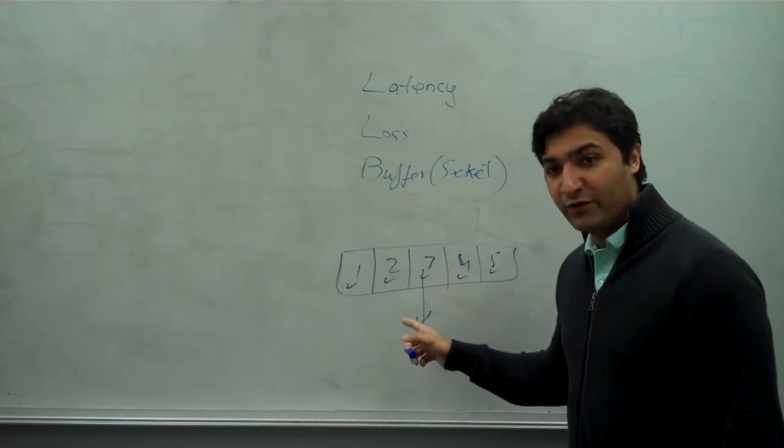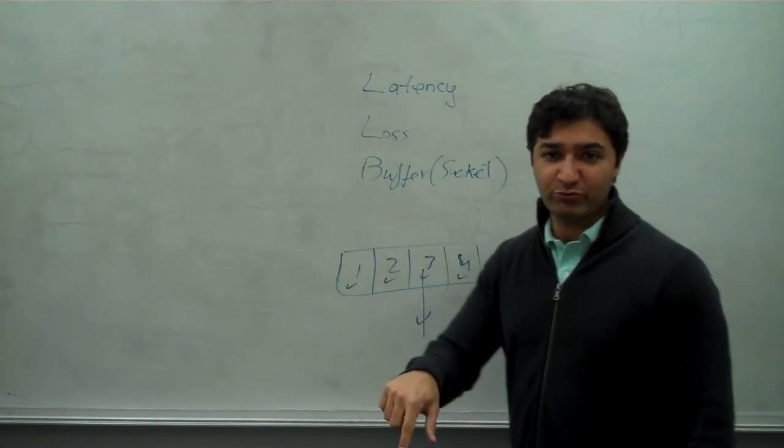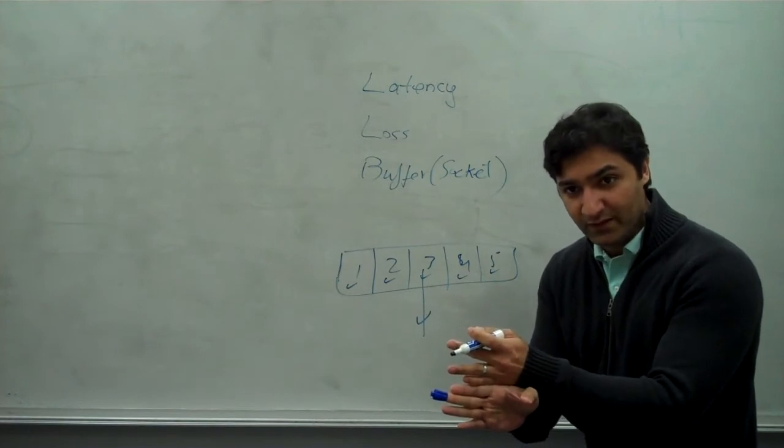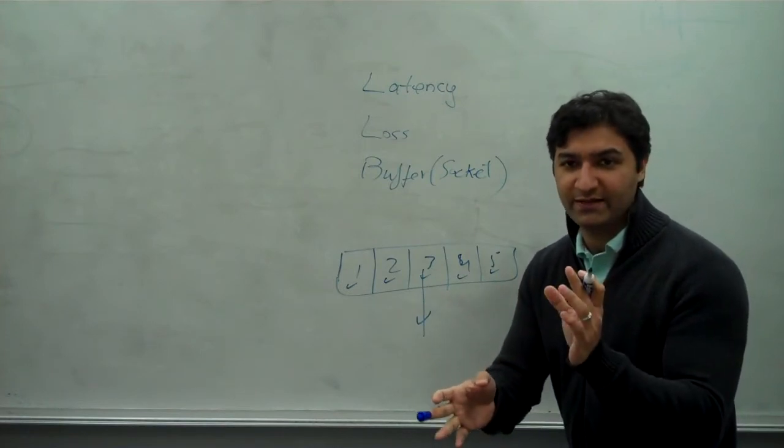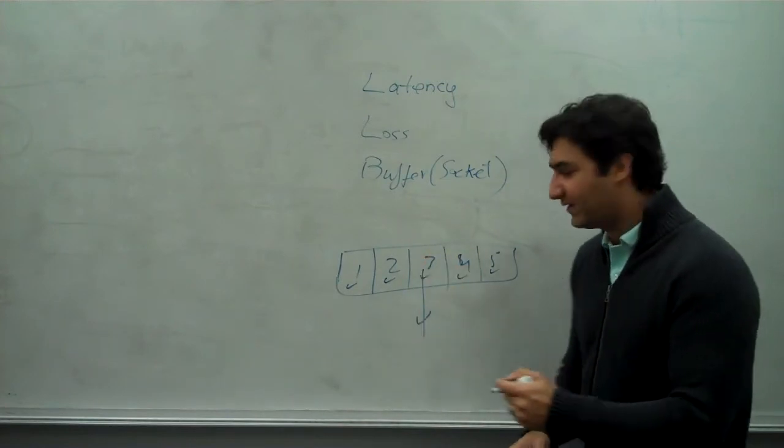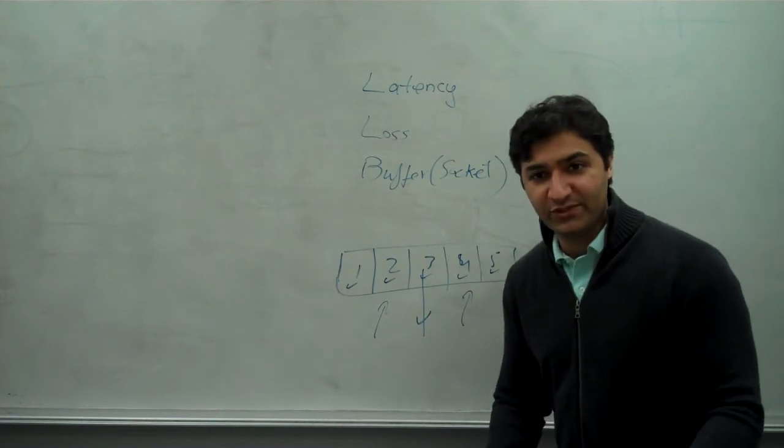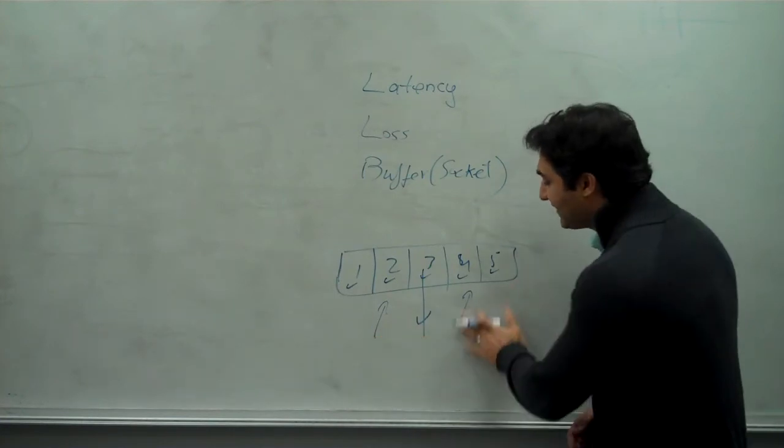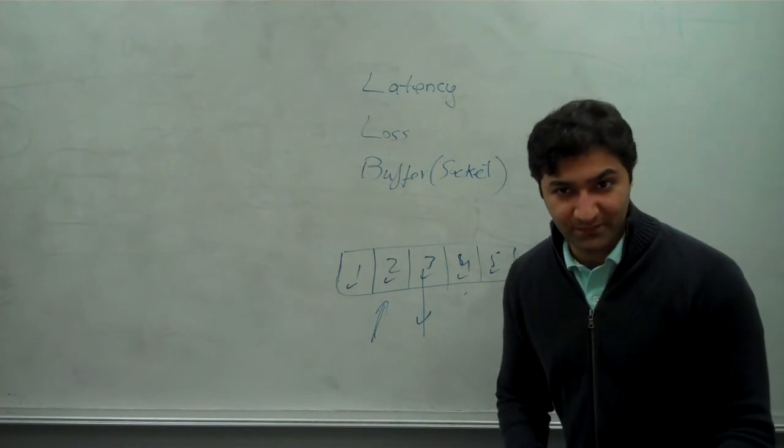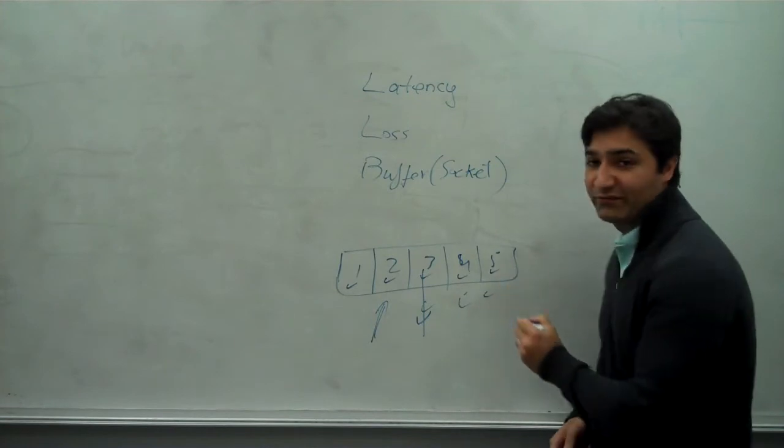Because three was lost, firstly I have to wait to find out that three was lost. And the way I find out is either the receiver can tell me explicitly that I lost three, which typically takes a very advanced setup. Typically what happens is the receiver will say I got two, I got four, but I didn't get three. So you have to retransmit three. Or what could happen is it says the last thing I saw was two. I haven't seen anything since.